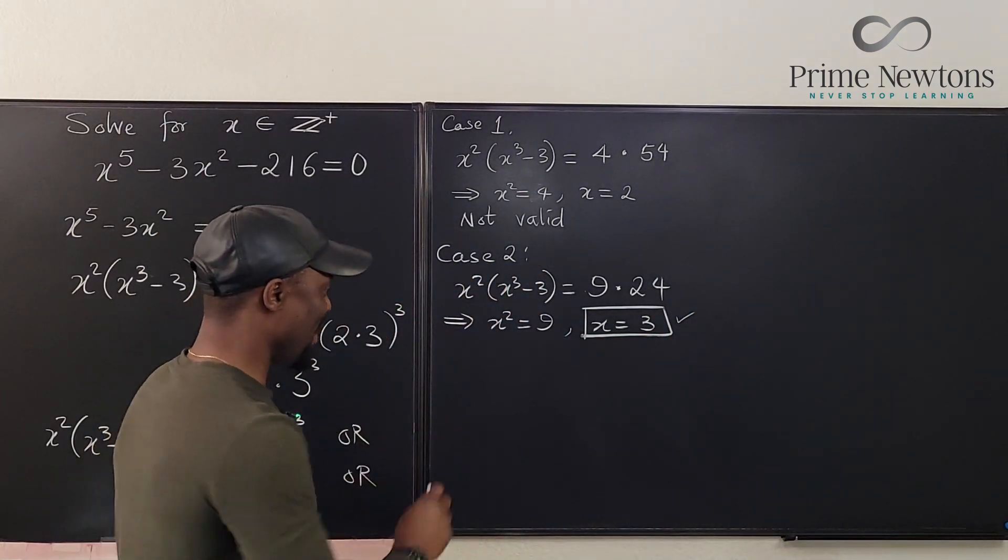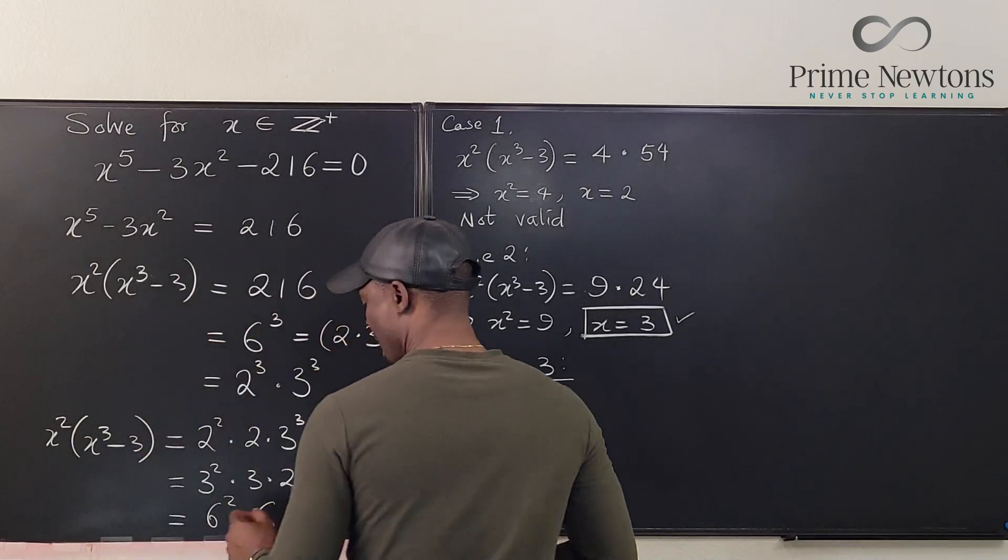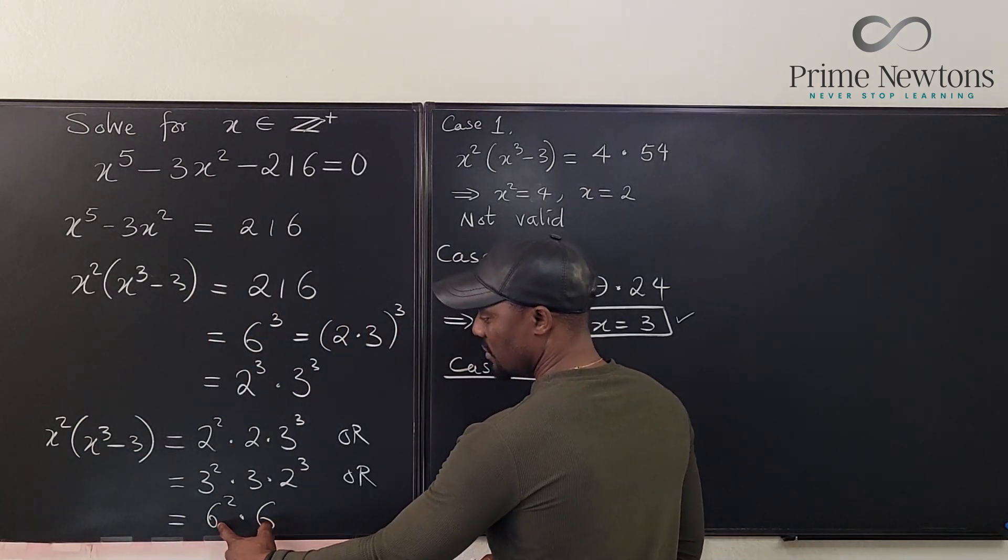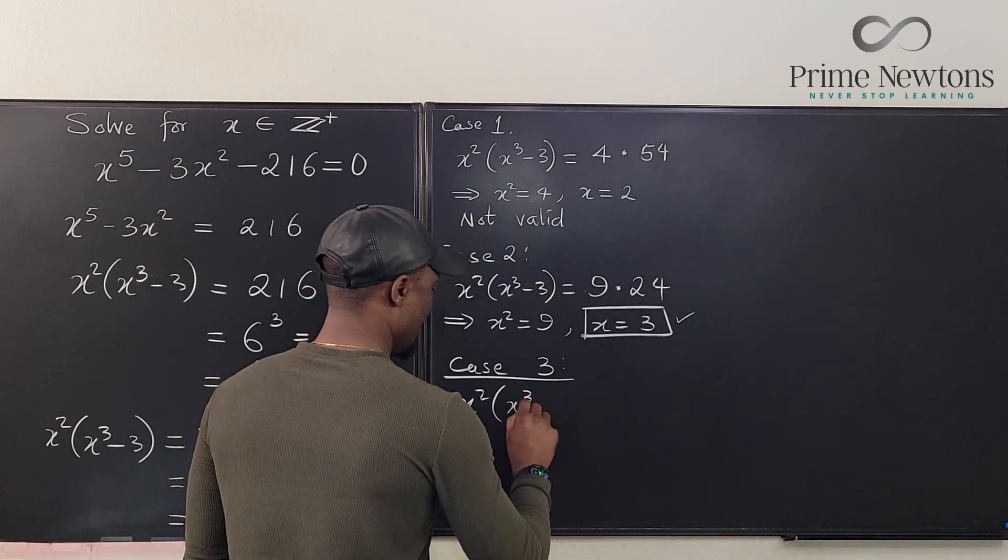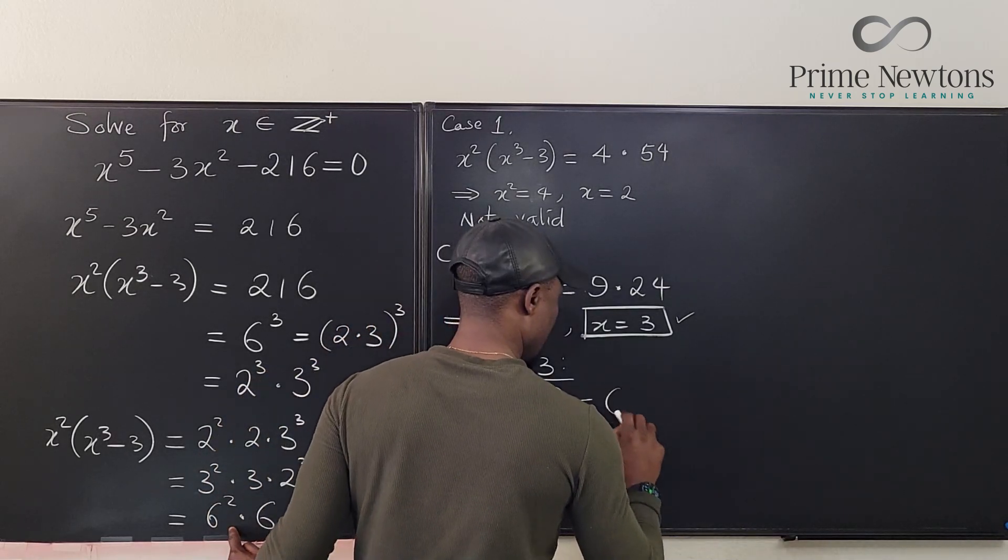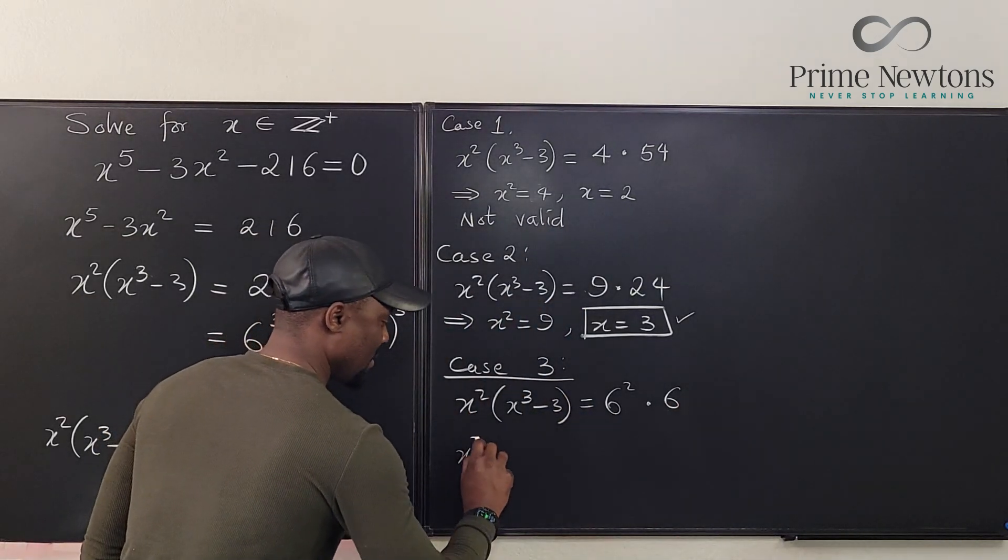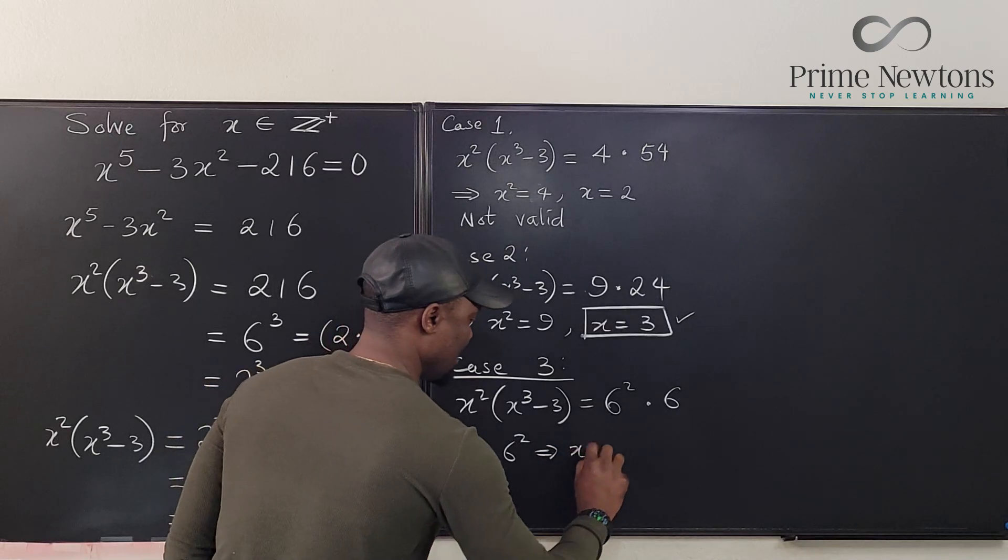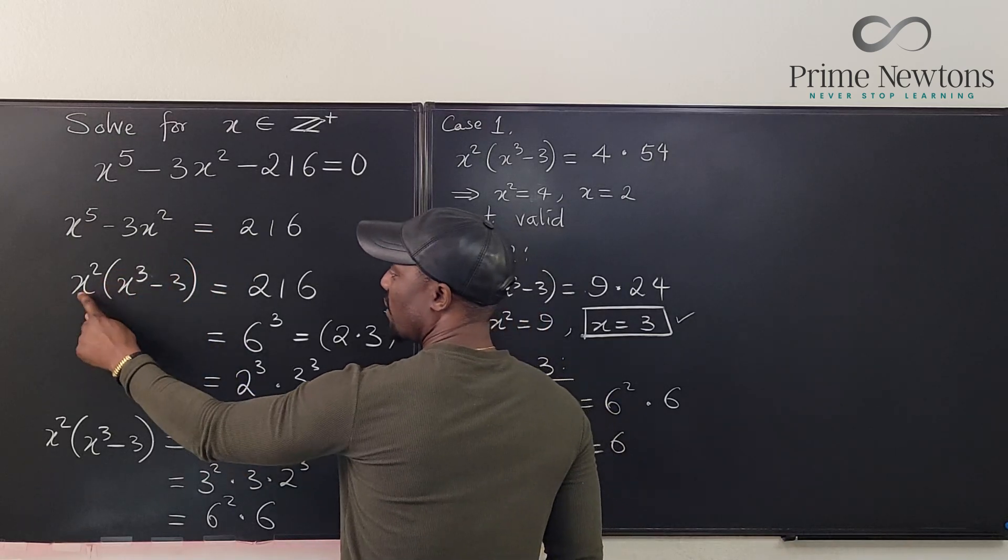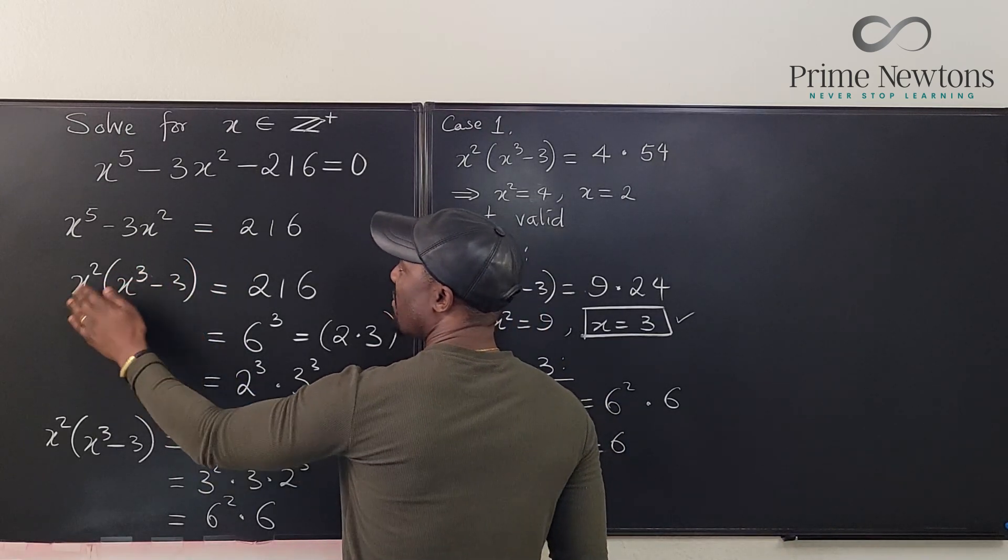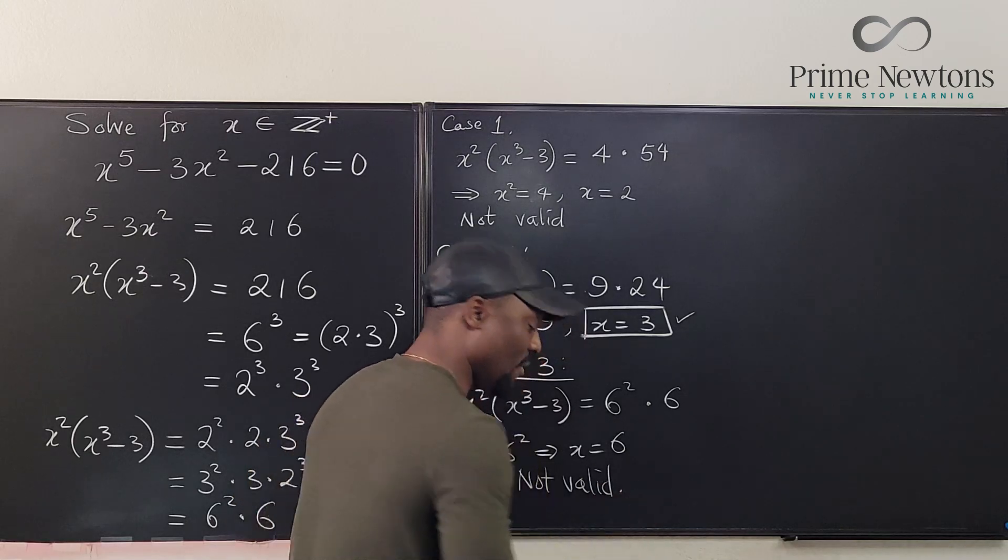Let's go to the third option, Case 3. In Case 3, we have x squared times (x cubed minus 3) equals 6 squared times 6. That tells us that x squared equals 6 squared, which implies x equals 6. Well, if x equals 6, can we have this? This is going to be 36. 6 squared is 216 minus 3. By the time you multiply this, this number is going to be too big, so not valid.